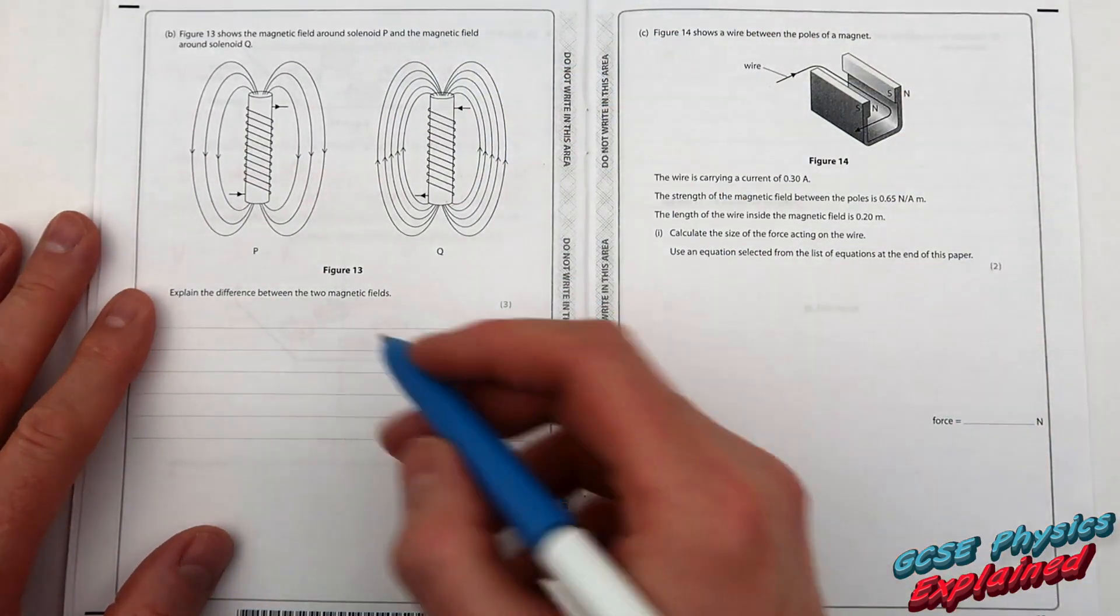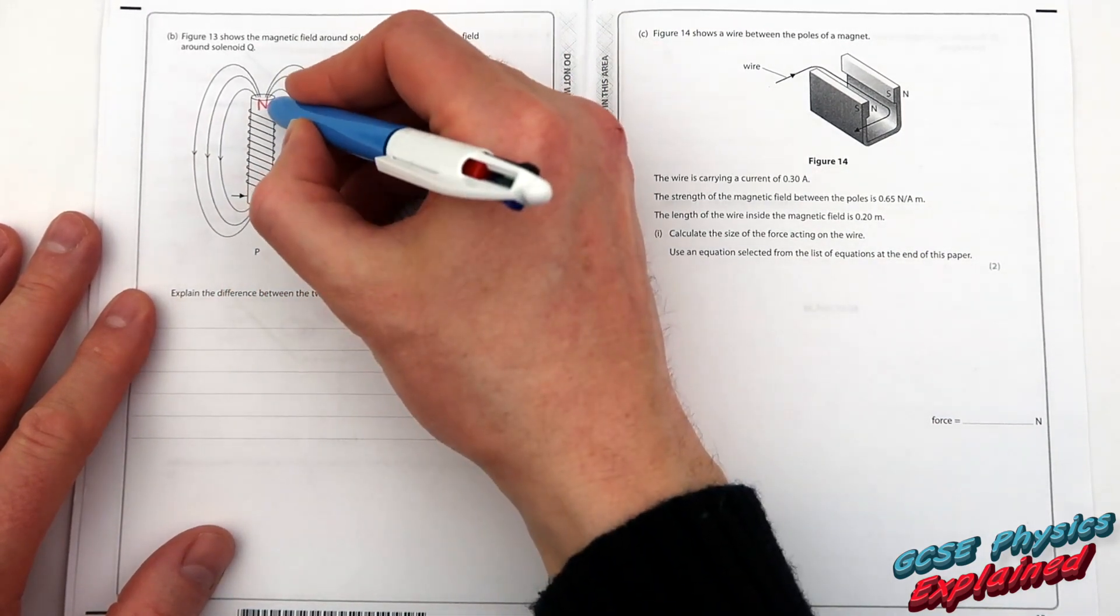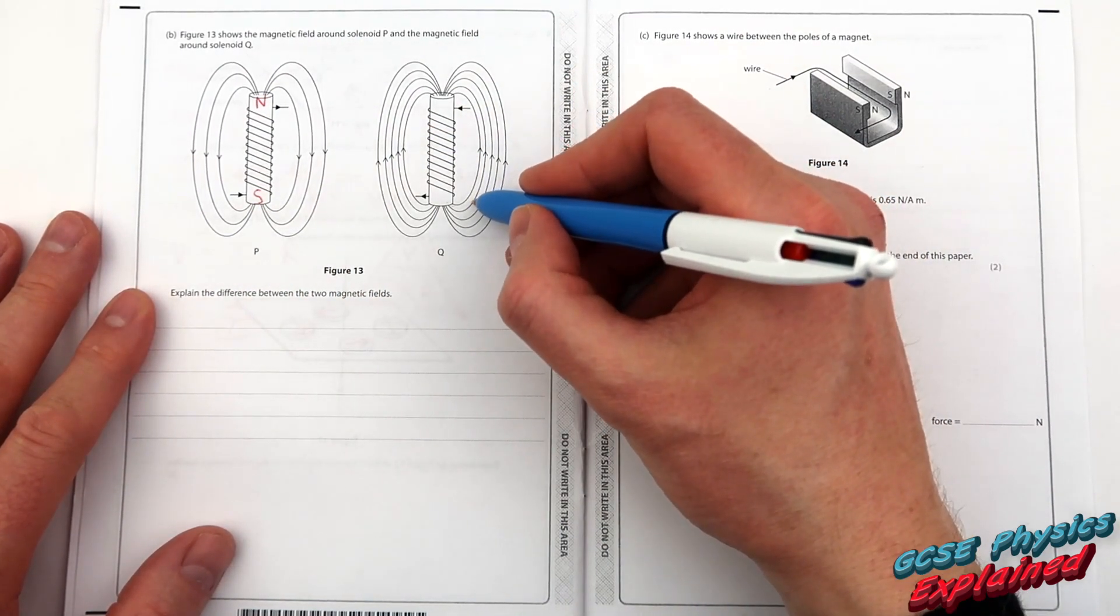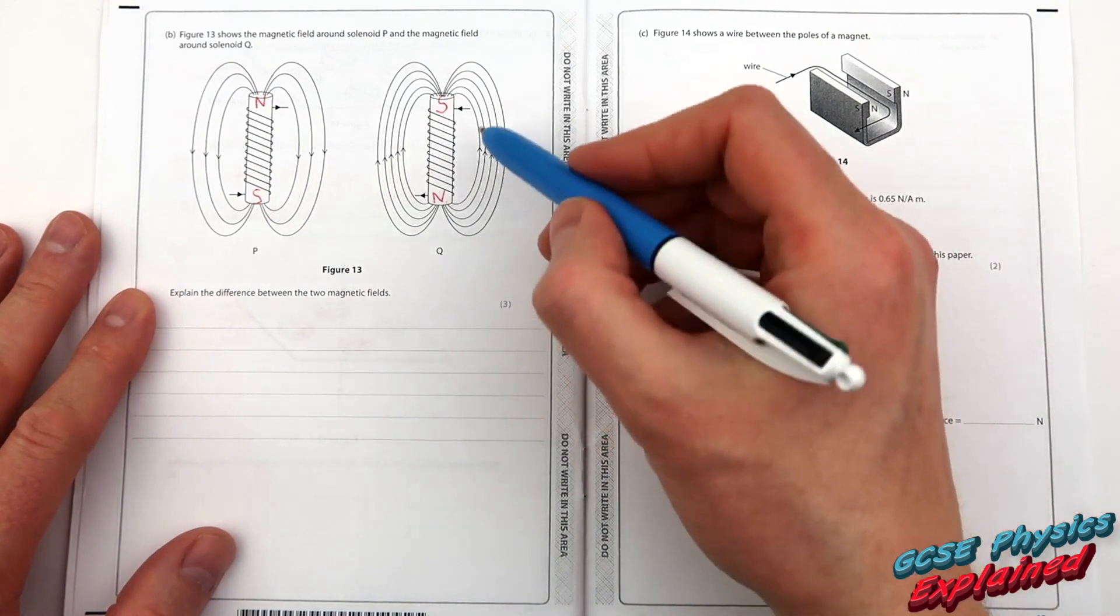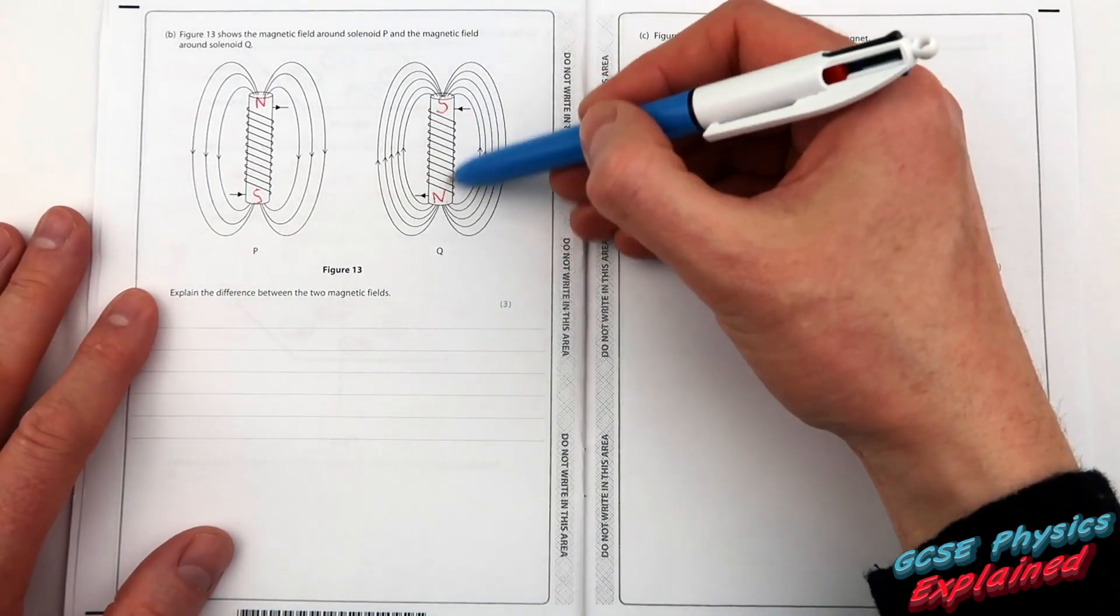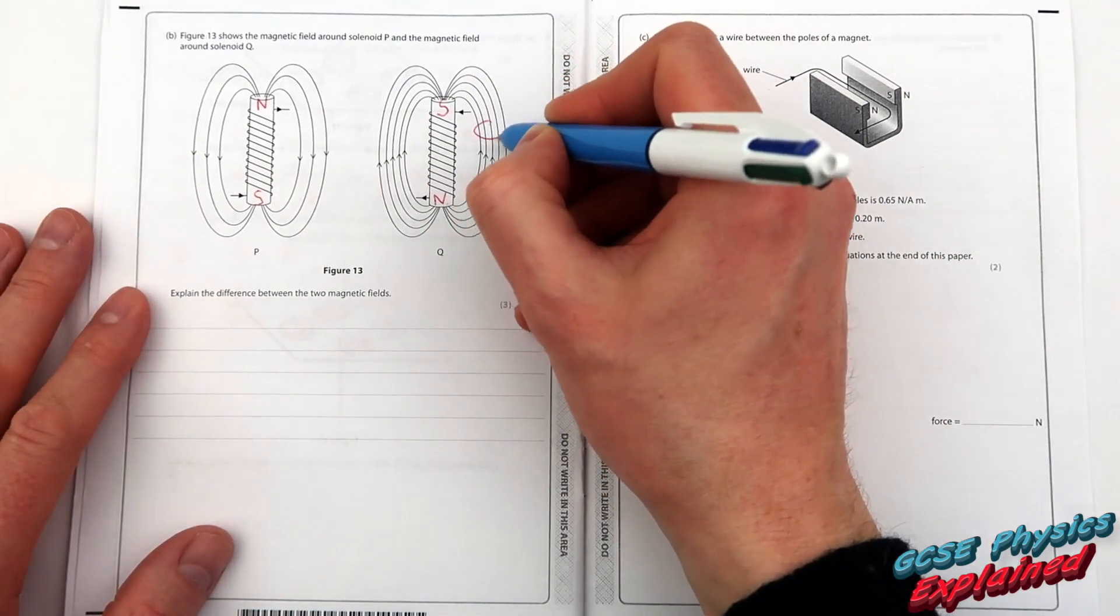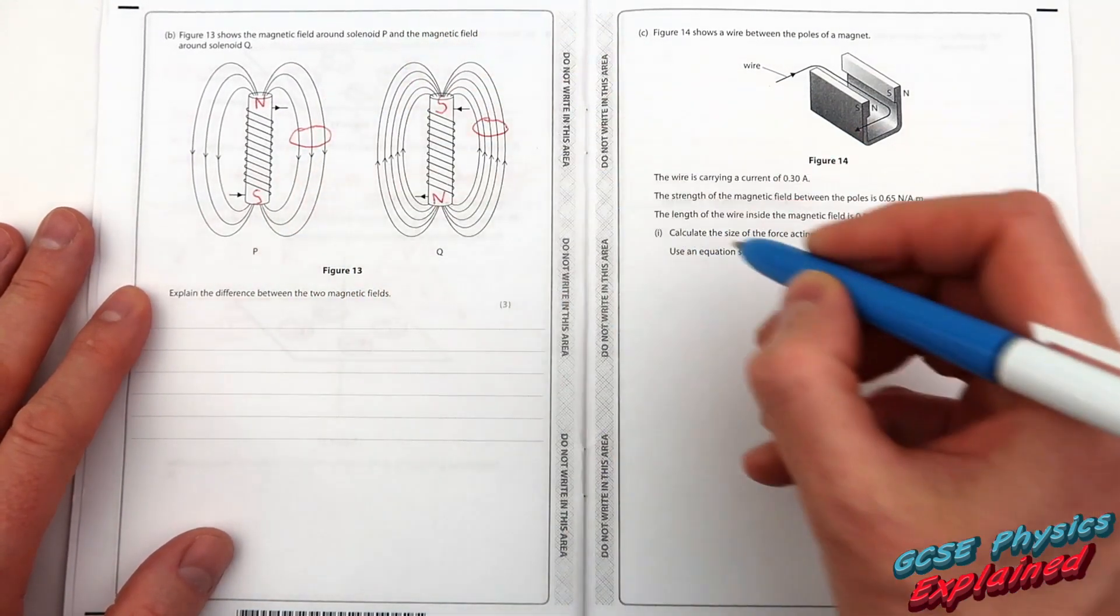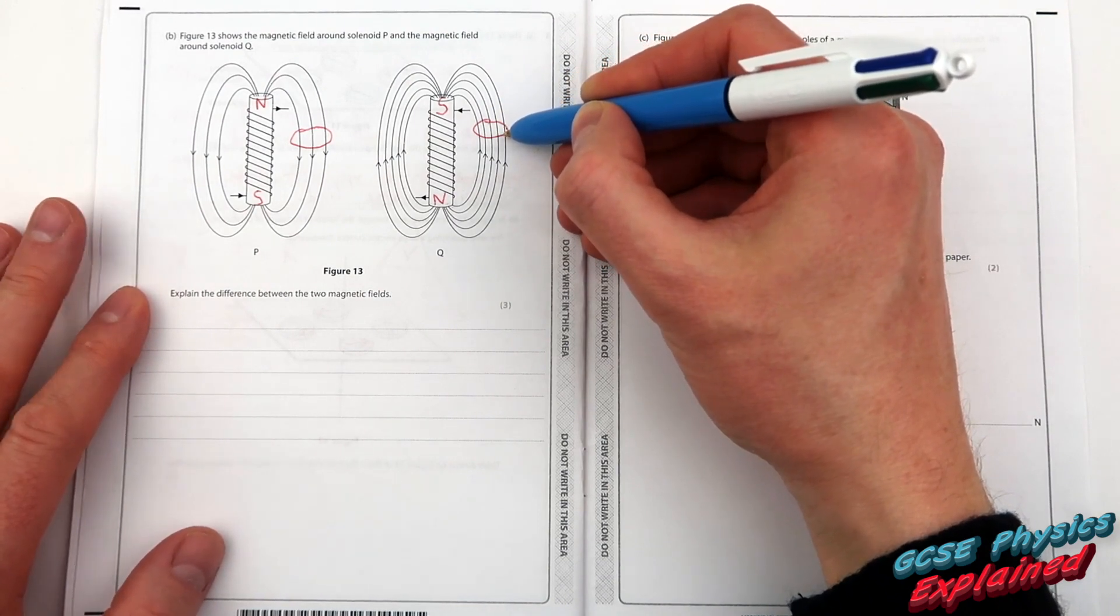Now the magnetic field always travels from the north into the south. So that's the north pole and the south pole. So the magnetic field always comes out of the north and goes into the south. So you can see these solenoids are acting as bar magnets but they are orientated in different directions. What else do you spot? Well look how close these lines are together and compare that to how close these lines are together.